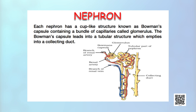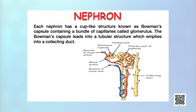Each kidney has a number of excretory units or filtration units called nephrons. Each nephron has two parts: the glomerulus and the renal tubule. The glomerulus is a bundle of capillaries formed by the efferent arteriole, a fine branch of the renal artery. The renal tubule begins with a double-walled cup-like structure called Bowman's capsule which encloses the glomerulus. The tubule continues further to form a highly coiled network and then into a hairpin-shaped tubule. The tubules from many nephrons open into a straight tube called the collecting duct, as shown in the diagram on your screen.